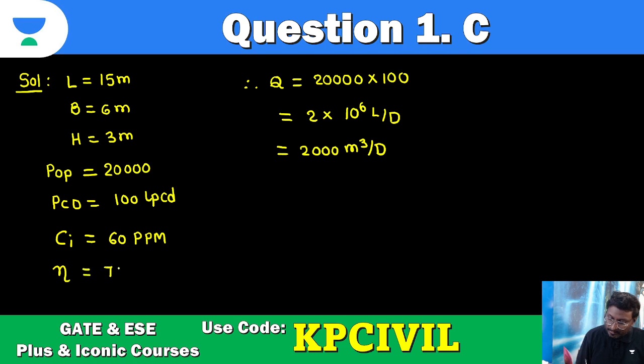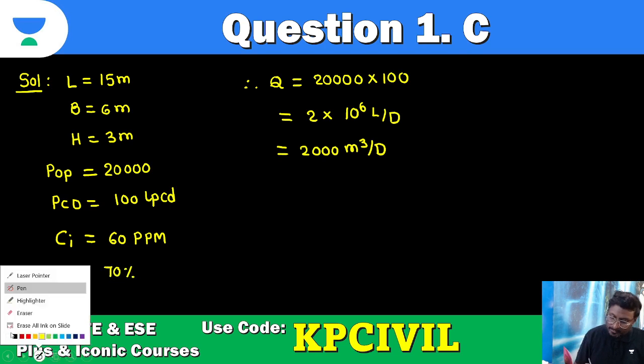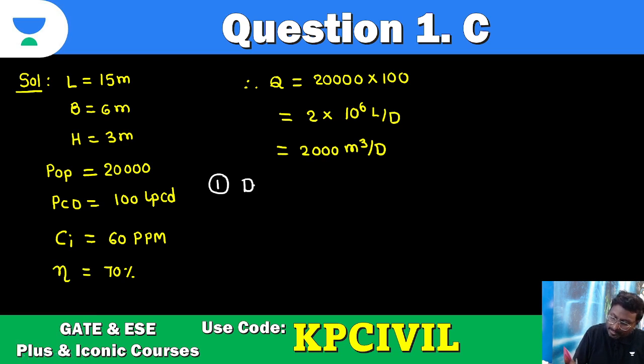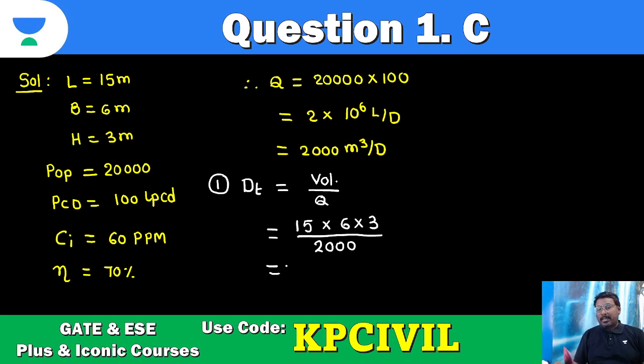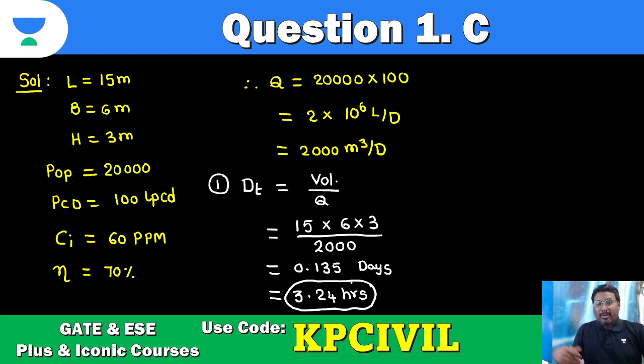First question is about detention time DT. DT is volume upon discharge. Volume LBH 15 into 6 into 3, discharge 2,000 meter cube per day. So when you take this in days, 0.135 days, convert to hours, 3.24 hours. So please convert to hours, 3.24 hours. Check your previous mains class if you have attended my class. Same 3.24 hours detention time question will be there.